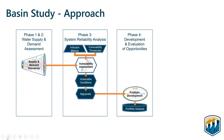The study was broken up into four phases. The first two phases were the water supply and demand assessment. The third phase was the system reliability analysis, which I'll spend the bulk of my time speaking about. The fourth phase looked at the development and evaluation of opportunities to mitigate the supply-demand imbalance.